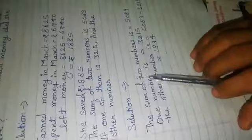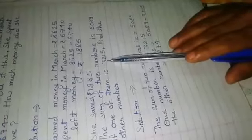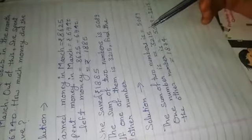The sum of two numbers is Rs. 5,089. We write here Rs. 5,089. The first number is Rs. 3,215. We write here Rs. 3,215.